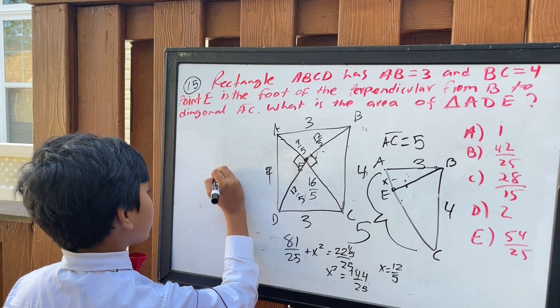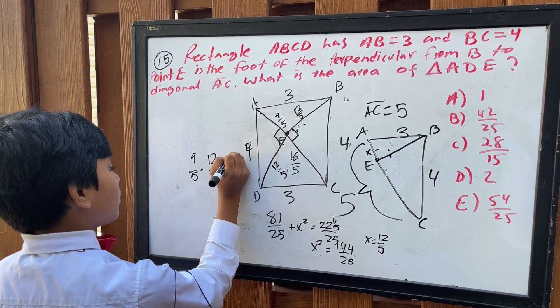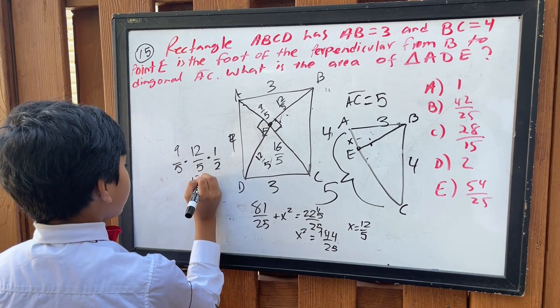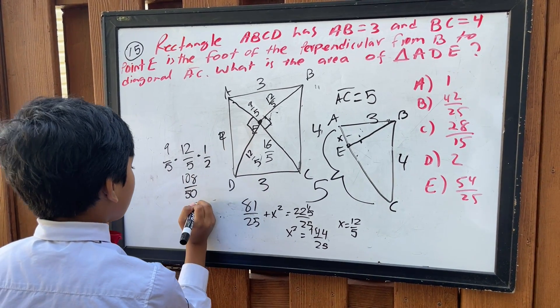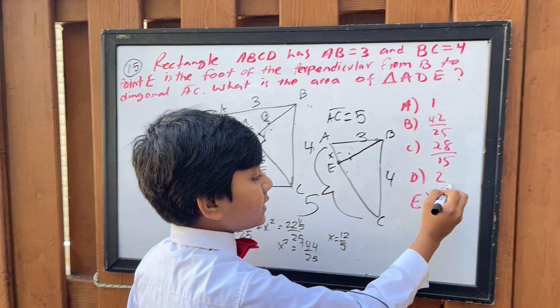So now we have nine over five times twelve over five times one over two, because half the base times height, gives us 108 over 50, which is also 54 over 25. So that's it. Thank you very much.